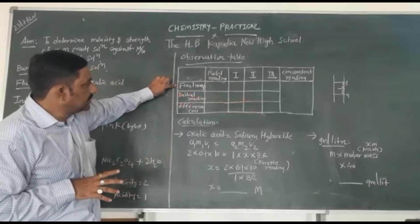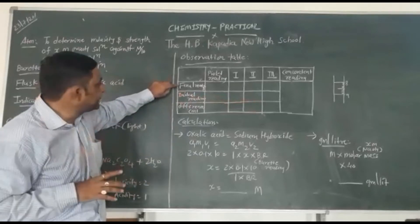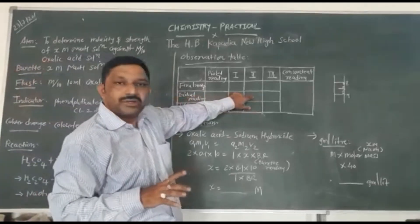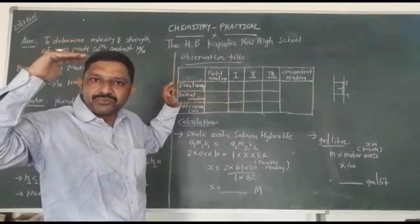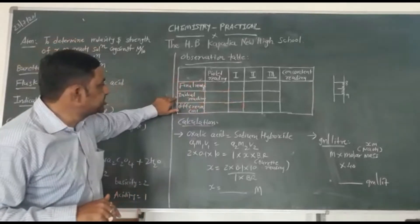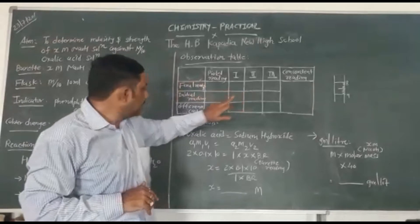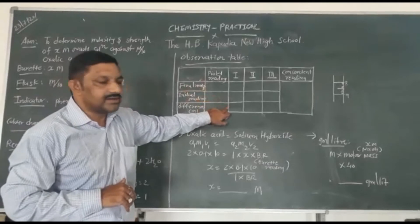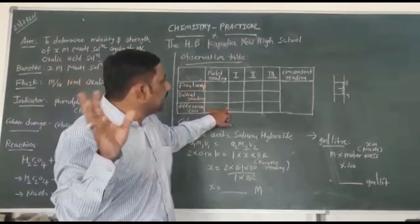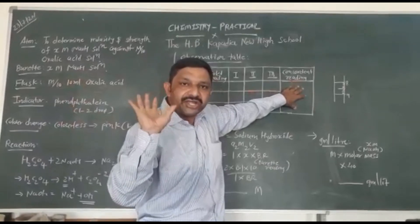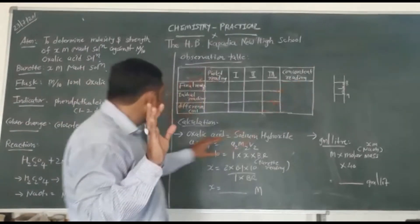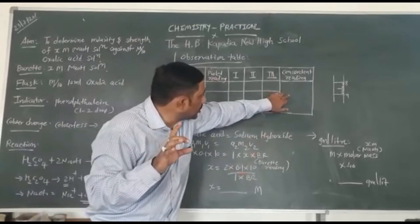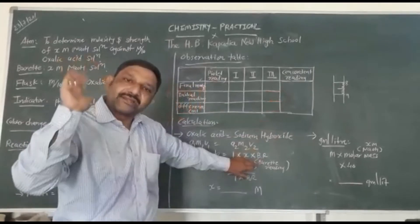For the burette readings: final reading is the burette reading after titration. Initial reading is 0.0 — you have to set your burette at the 0 scale. The difference is: final reading minus 0.0. You have to take the concordance reading for your calculation — it is your burette reading used in the calculation.